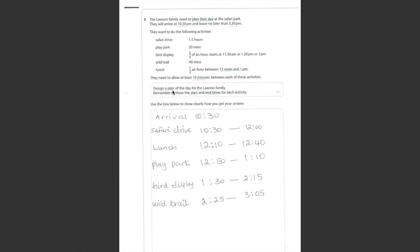Here we are asked to design a plan for Lawson family. Remember start time and end time is very important here. This is my design for the Lawson family. Your plan can be different. I start at 10.30pm and my finish time is 3.05pm. My lunch time is definitely between 12.10pm to 12.40pm, which is between 12 noon and 1pm. And between each activity, I've got 10 minutes in between each activity.